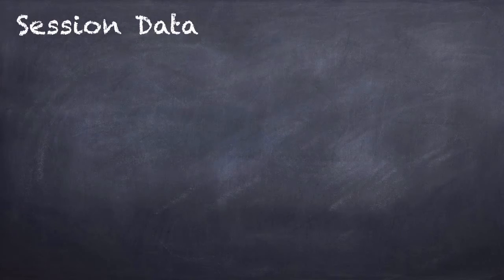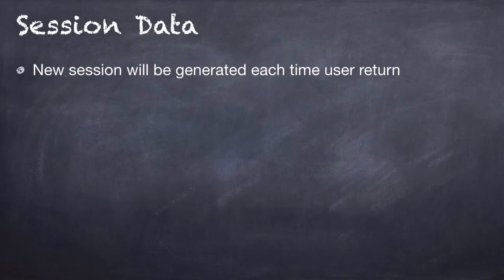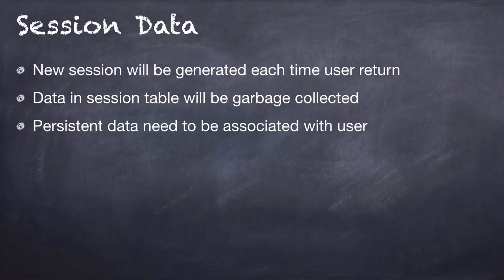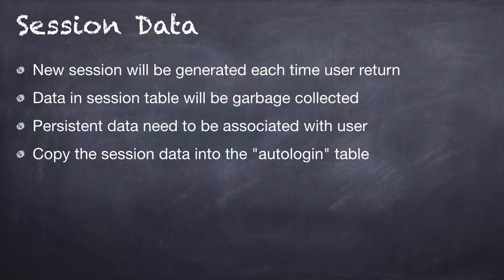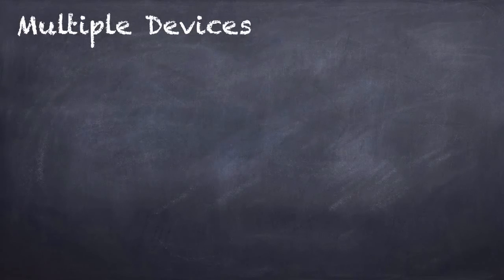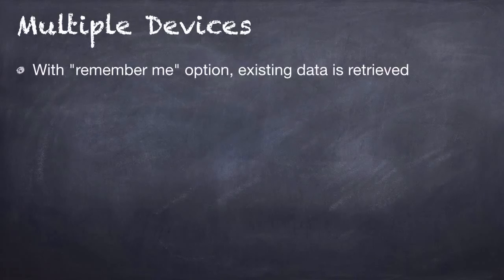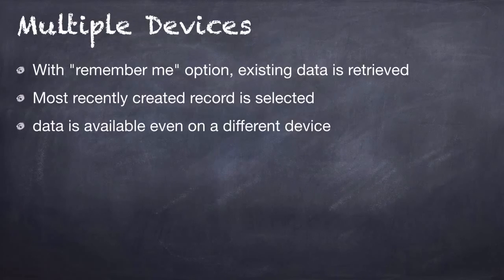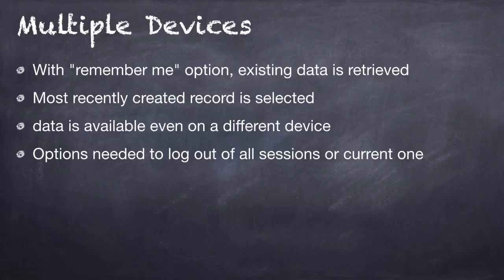And what happens to the session data? A new session will be generated each time the user returns to the system. Data in the session table will be garbage collected, and persistent data needs to be associated with the user. We're going to copy the session data into the auto-login table and save it with the user key. This also works for multiple devices — by using the remember me option, existing data is retrieved and the most recently created record is selected. Data is available across different devices this way. Also, users need the option to log out of all sessions or just the current one.